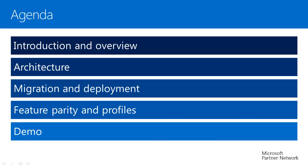The fourth topic is Feature Parity and Profiles, where we will compare the feature set of on-premise and online users in a hybrid deployment. It would be helpful for understanding user experience for a specific group. Finally, we will go through a short demo on Split Domain Configuration, User Migration, and Vanity Domain Configuration. Let's start with the first slide.